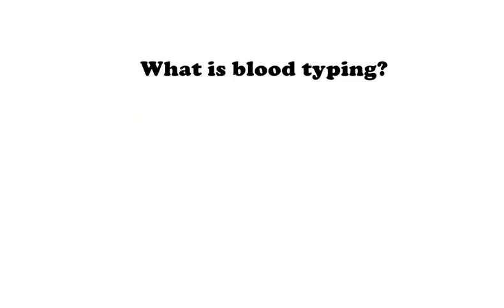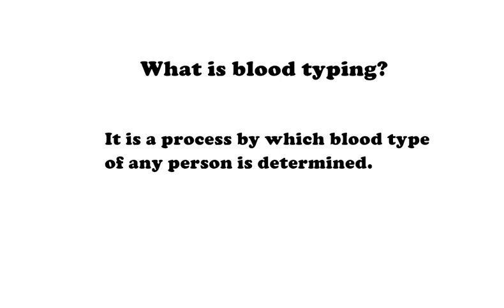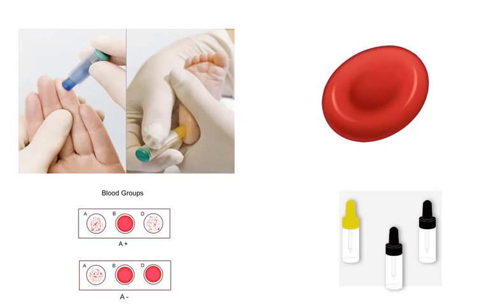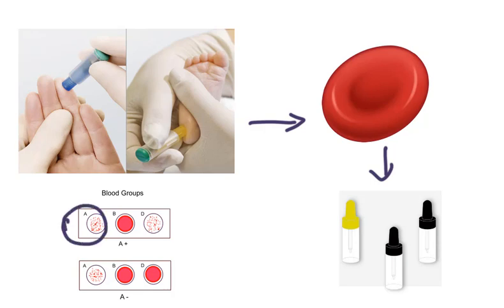Now an important question: what is blood typing? It is a process by which the blood type of any person is determined. First, blood is collected from a person. Then the red blood cells are mixed with anti-sera containing agglutinins, which means antibodies. Then we wait for agglutination. If agglutination takes place, red blood cells become clumped. For example, if agglutination occurs by mixing the blood with anti-A agglutinin, the blood group will be A.